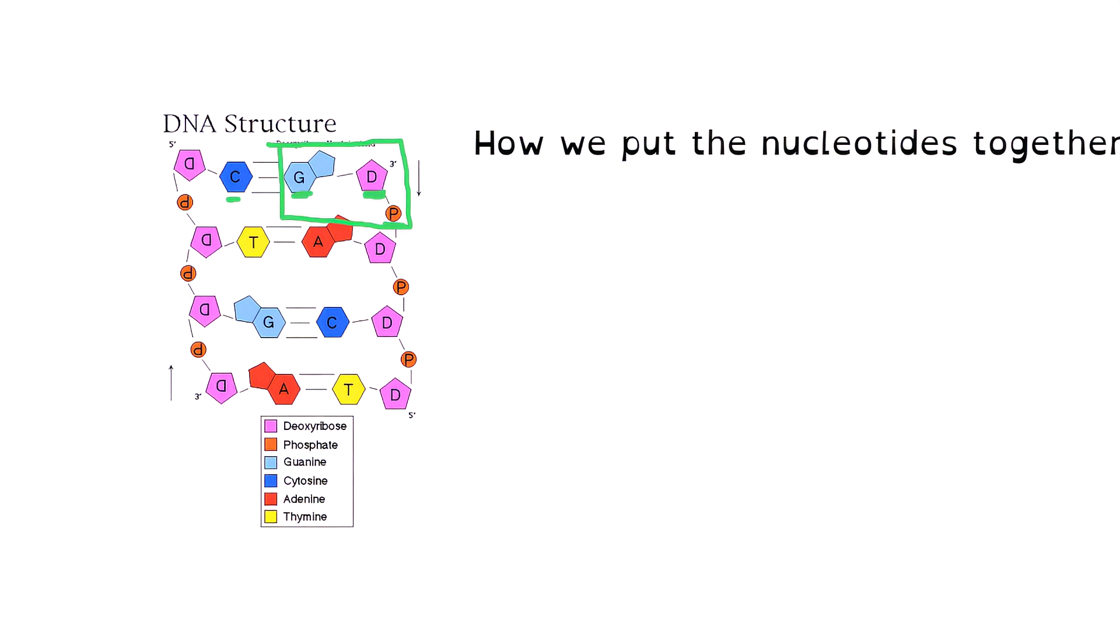Now, in order to hold all of the nucleotides together, we need some kind of foundation, and that is where we find the sugar phosphate backbone. Essentially, what that is, is all of the phosphates and sugars that run along down each side of the double strand that we find in the double helix. And we call this the sugar phosphate backbone.